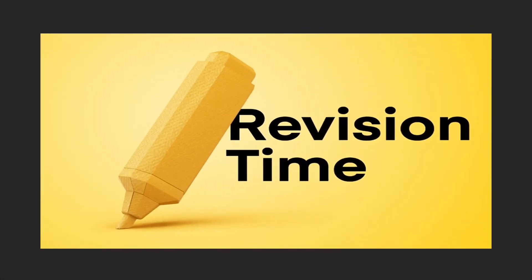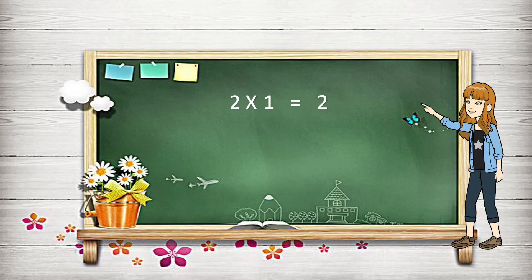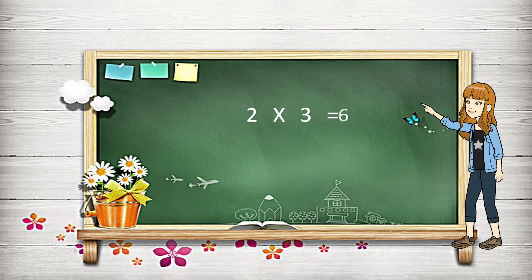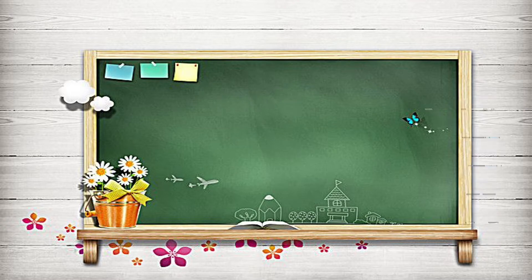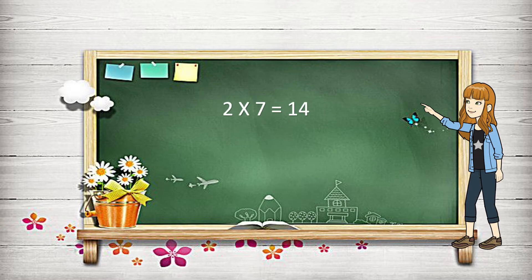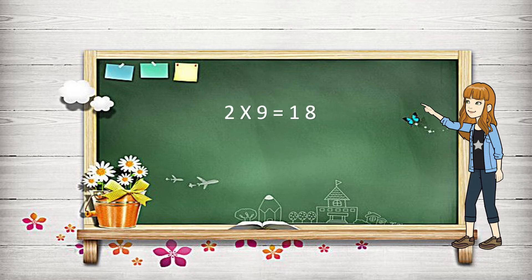It's revision time! Let's have a revision! 2 one's are 2. 2 two's are 4. 2 three's are 6. 2 four's are 8. 2 five's are 10. 2 six's are 12. 2 seven's are 14. 2 eight's are 16. 2 nine's are 18. 2 ten's are 20.